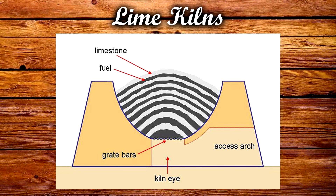In a draw kiln, the kiln was filled with alternating dome-shaped layers of chalk or limestone and wood or coal. It was then lit from the bottom and spread upwards through the layers. As it burned, lime was collected through a grated hole at the bottom known as the draw hole. As it burned further, layers of stone and fuel could be added on top to keep the kiln going continuously.